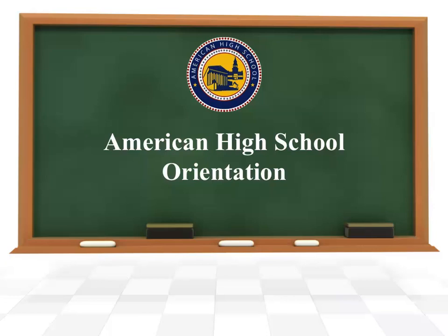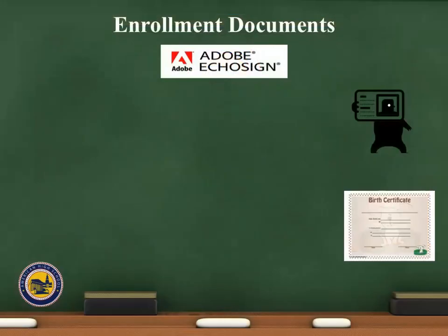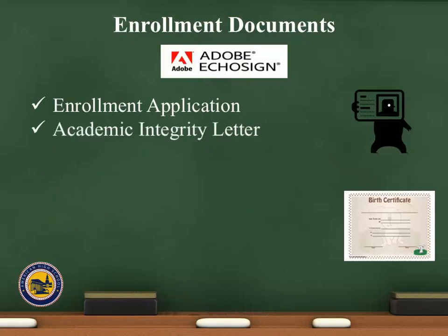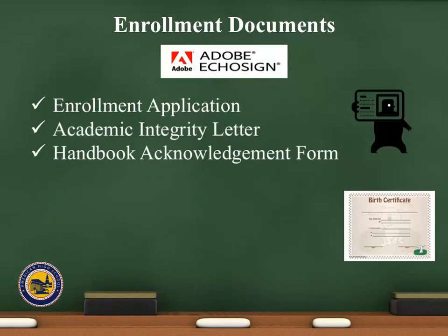The first thing I wanted to go over are some important emails you will be receiving. The first email is going to be your enrollment documents. These documents are completed and returned through Adobe EcoSign, which will allow you to sign the documents electronically. The documents you must complete are the Enrollment Application, the Academic Integrity Letter, and the Handbook Acknowledgement Form.